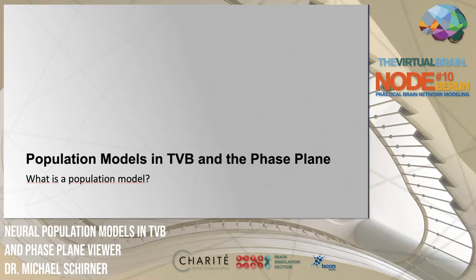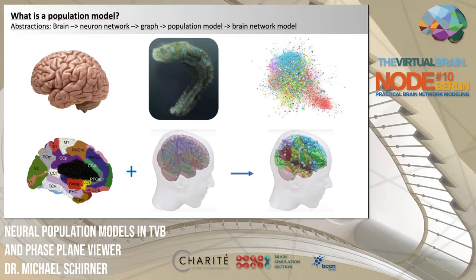What is a population model? With brain neural models, we aim to simulate brains. Brains consist of neurons and form a complicated network. In TVB, we parcellate the brain into a set of brain regions and compute the interregional coupling between brain areas using a technique called diffusion-weighted MRI tractography.